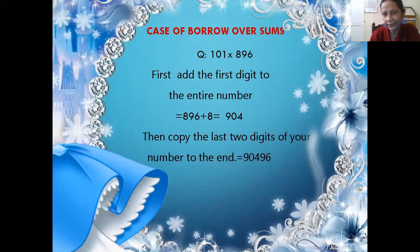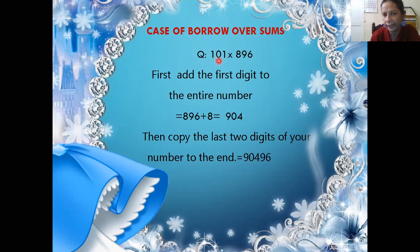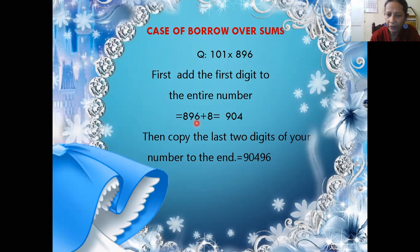Now look here carefully. This is a different case — the case of borrow over. This is important. What is the difference between this case and the earlier cases? This is the borrow over case. In the previous questions you did not have borrow over — those were simple cases. Now with 101 multiplied by 896, you again first add the first digit to the entire number.